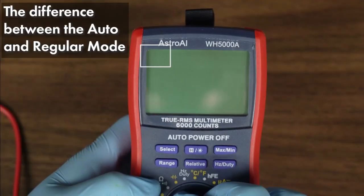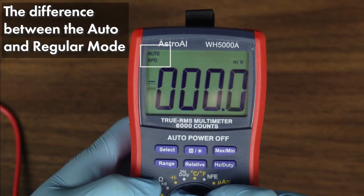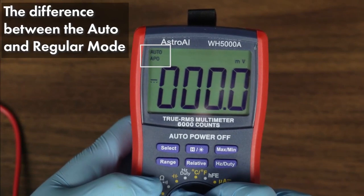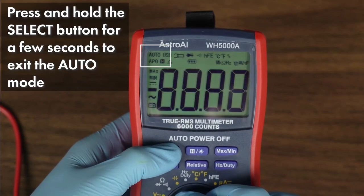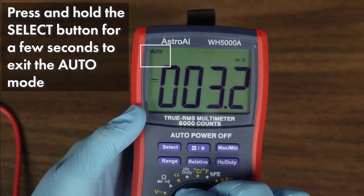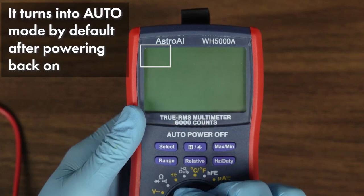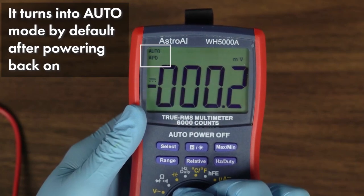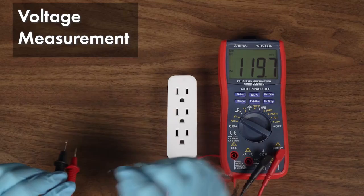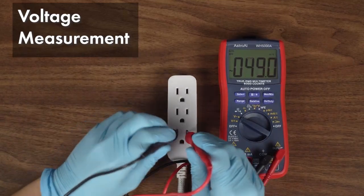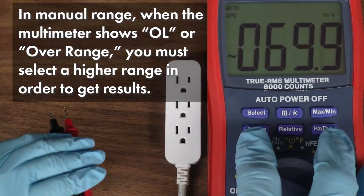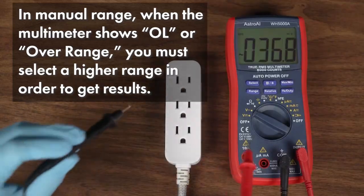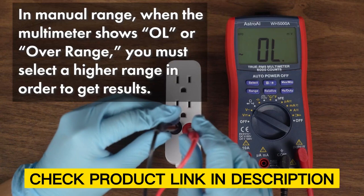Ideal for benchtop work, prototyping on breadboards, or identifying components, it's also great for DIY electronics, household wiring, and 12-24 VDC systems in cars and boats. While the magnetic hanger is weak and prone to collecting debris, and the kickstand and probe covers can be awkward, its larger size suits bench use. Despite minor drawbacks, its accuracy, versatility, and affordability make the Astro AI 6000 our top recommendation for hobbyists. Check the product link in the description.